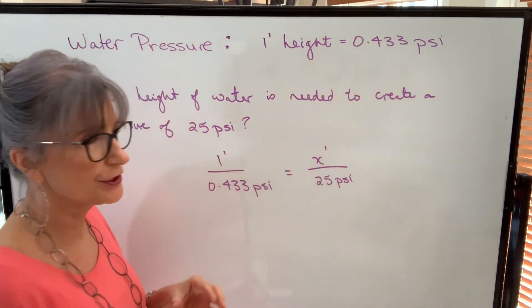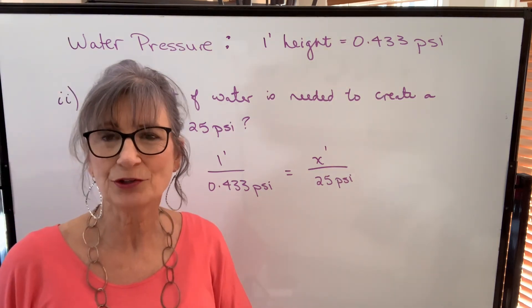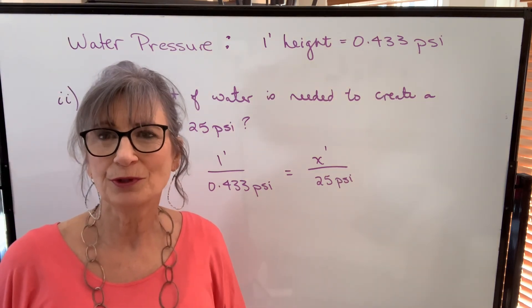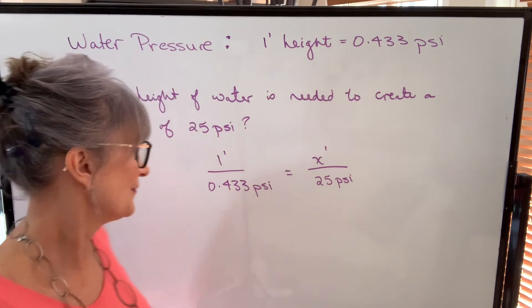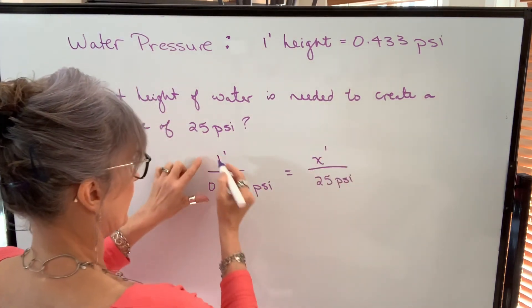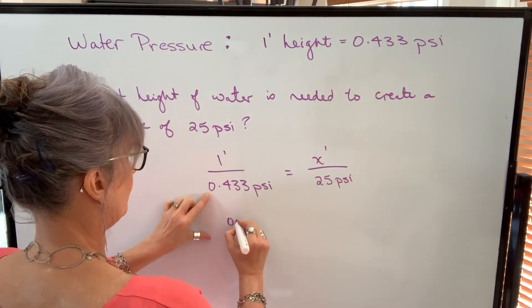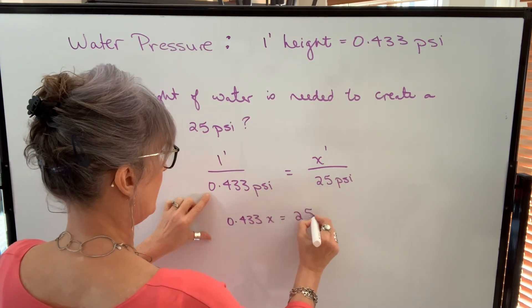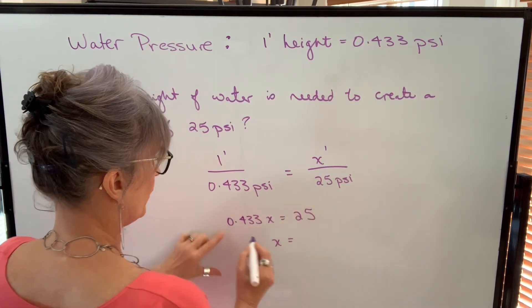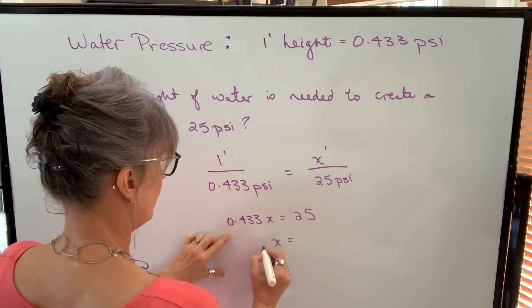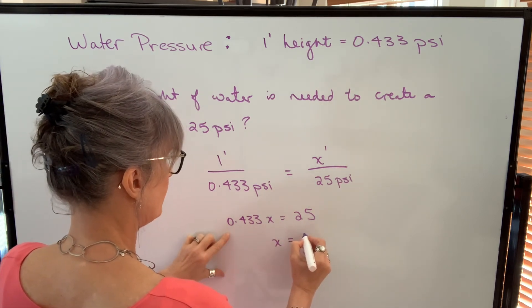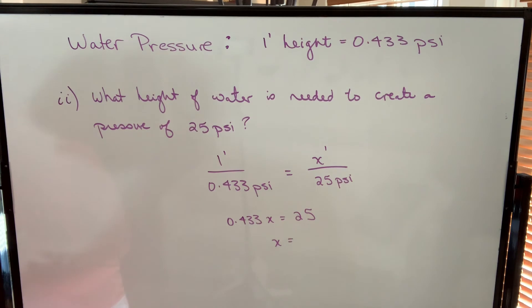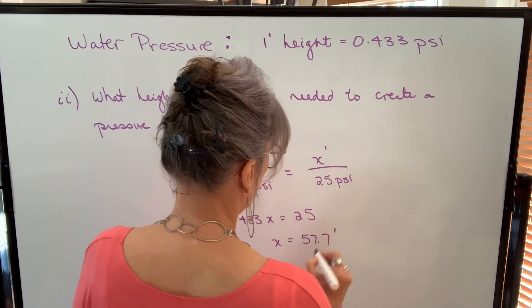The nice thing about proportion is you don't have to think about whether you multiply or divide by 0.433—your proportion tells you. So we can drop our units. We're going to cross multiply. We get 0.433 times x equals 25. So to solve this, we're going to divide both sides by 0.433. So 25 divided by 0.433 will be 57.7 feet.